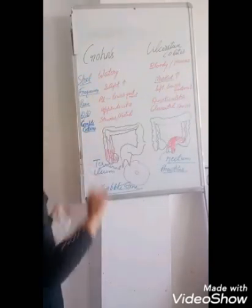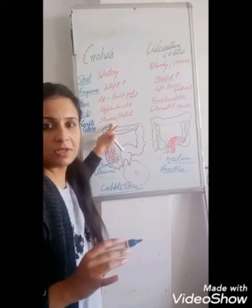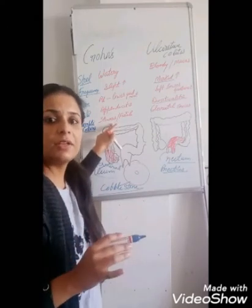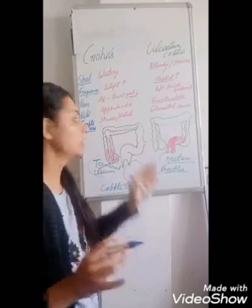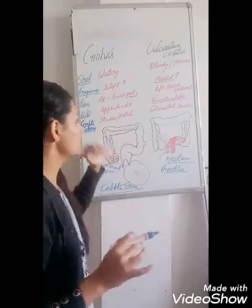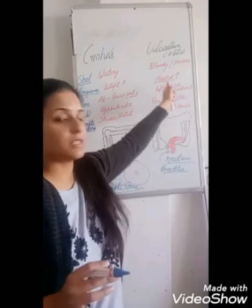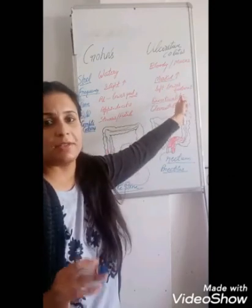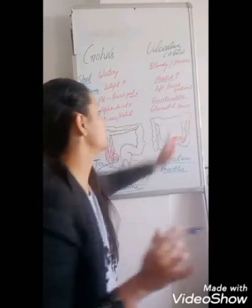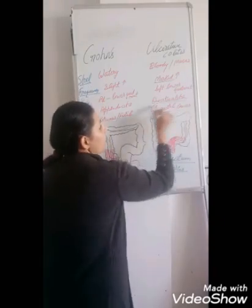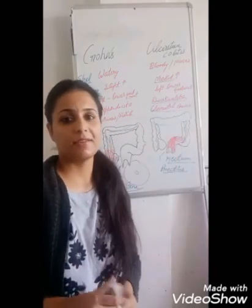In Crohn's disease complications, fistula formation occurs, along with perianal abscess formation in the anorectal region, and stenosis. In complications of ulcerative colitis, the most common complication encountered is colorectal carcinoma, or colorectal cancer.